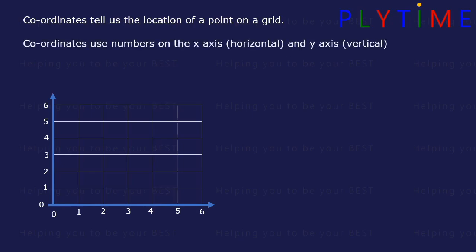They use numbers on the x-axis, which is horizontal, and on the y-axis, the vertical. So the x-axis is horizontal, across the bottom, and the y-axis is vertical, up the side.